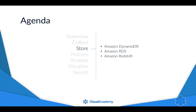In this Big Data on AWS learning path we cover the many AWS Big Data Services that can be used to collect, store, process, analyze, visualize and secure big data. In this course we provide three modules which cover the big data storage services of Amazon DynamoDB, Amazon RDS and Amazon Redshift.